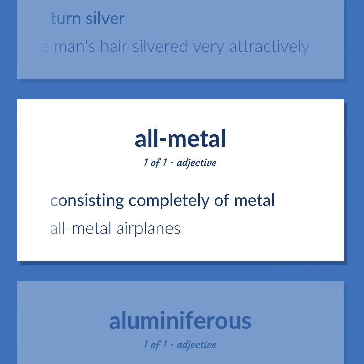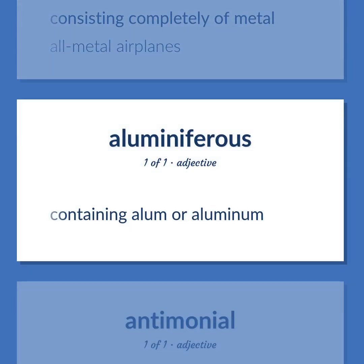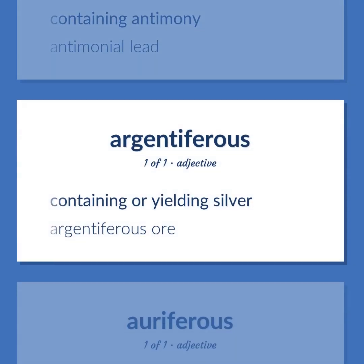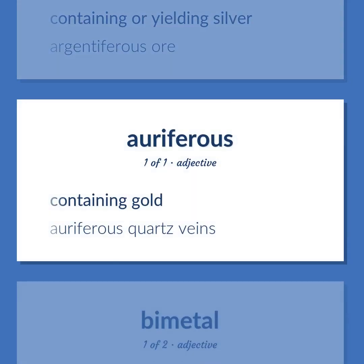All-metal: consisting completely of metal — all-metal airplanes. Aluminous: containing alum or aluminum. Antimonial: containing antimony — antimonial lead. Argentiferous: containing or yielding silver — argentiferous ore. Auriferous: containing gold — auriferous quartz veins.